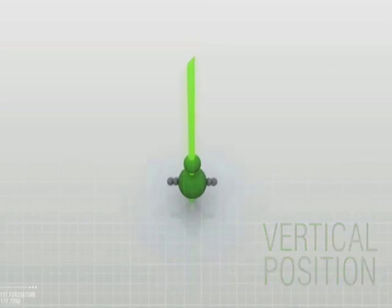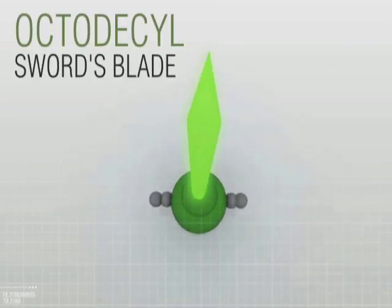The octodecyl chain, which acts as a sword blade, physically piercing the cell wall of the microorganism to kill them.